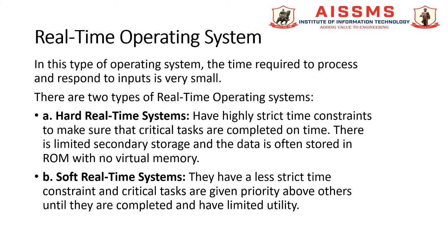There are two types of real-time operating system: hard real-time system and soft real-time system. A hard real-time system has a highly strict time constraint to make sure that critical tasks are completed on time. There is limited secondary storage and the data is often stored in ROM with no virtual memory.